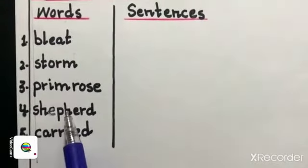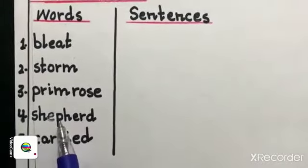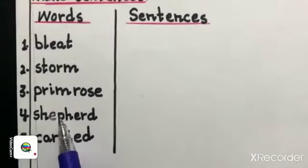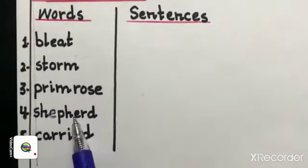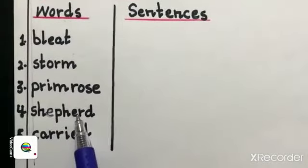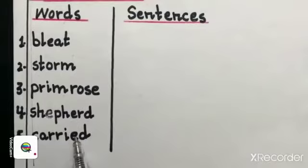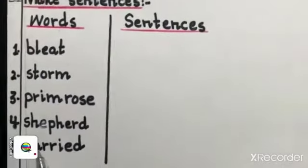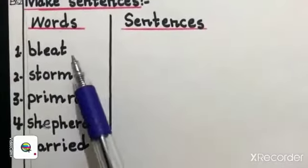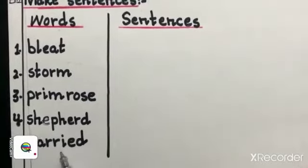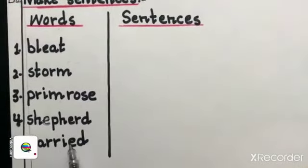Your fourth word is SHEPHERD. SHEPHERD is a person who take care of sheep. You have to make sentence of SHEPHERD. Your fifth word is CARRIED. CARRIED means to hold something, to carry something. You have to make sentences of all these five words and you have to write your words meaning.